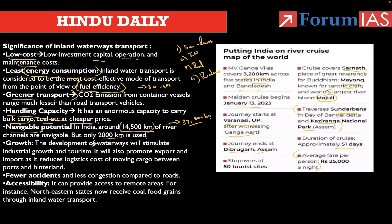The development of waterways will stimulate industrial growth and tourism. Today, inland waterways account for 5% of total share, but by 2027, inland waterways will have a share of 33% of total waterways. Inland waterways are less congested, so the probability of accidents is very low compared to roadways.